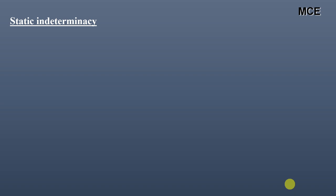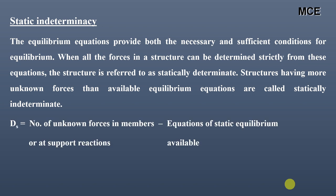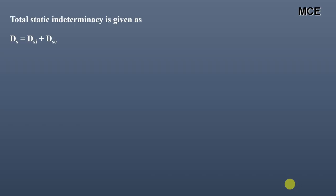First, the definition of static indeterminacy. The equilibrium equations provide both the necessary and sufficient conditions for equilibrium. When all the forces in a structure can be determined strictly from these equations, the structure is referred to as statically determinate. Structures having more unknown forces than available equilibrium equations are called statically indeterminate. It is given as the number of unknown forces in members or at support reactions minus the equations of static equilibrium available.